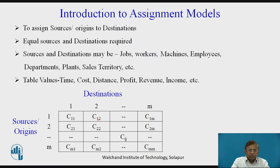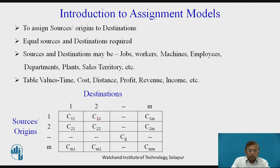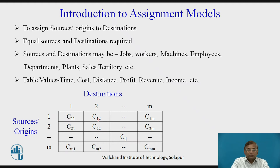As shown in the table at the bottom of this slide, sources or origins are listed on the left side as 1, 2, 3 up to M, and destinations are listed across the top, also 1, 2, 3 up to M. The basic requirement is that the number of sources and destinations must be equal — both are M in number.